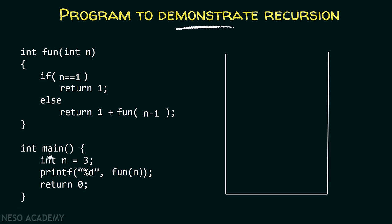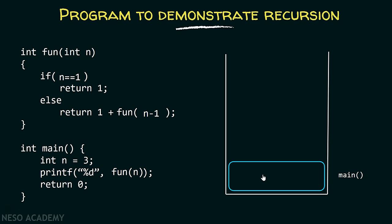As we know, execution starts from the main function and the operating system calls the main function. Therefore, the activation record of the main function will first be maintained inside the stack. This activation record will consist of the locals of this function, along with the parameters and the return address to the caller. But for simplicity, we are just maintaining the local variables — n equals 3 — inside this activation record.